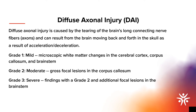A diffuse axonal injury is caused when the brain's long connecting nerve fibers, axons, are torn. This happens when the brain shifts and rotates inside the skull. DAIs have three grades: Grade 1 is mild with microscopic white matter changes in the cerebral cortex, corpus callosum, and brain stem; Grade 2 is moderate with gross focal lesions in the corpus callosum; and Grade 3 is severe with the same findings as moderate plus additional focal lesions in the brain stem. CT scans are not good at detecting a DAI — MRI scans are used to diagnose them, and imaging is required as a DAI cannot be diagnosed on clinical observations alone.